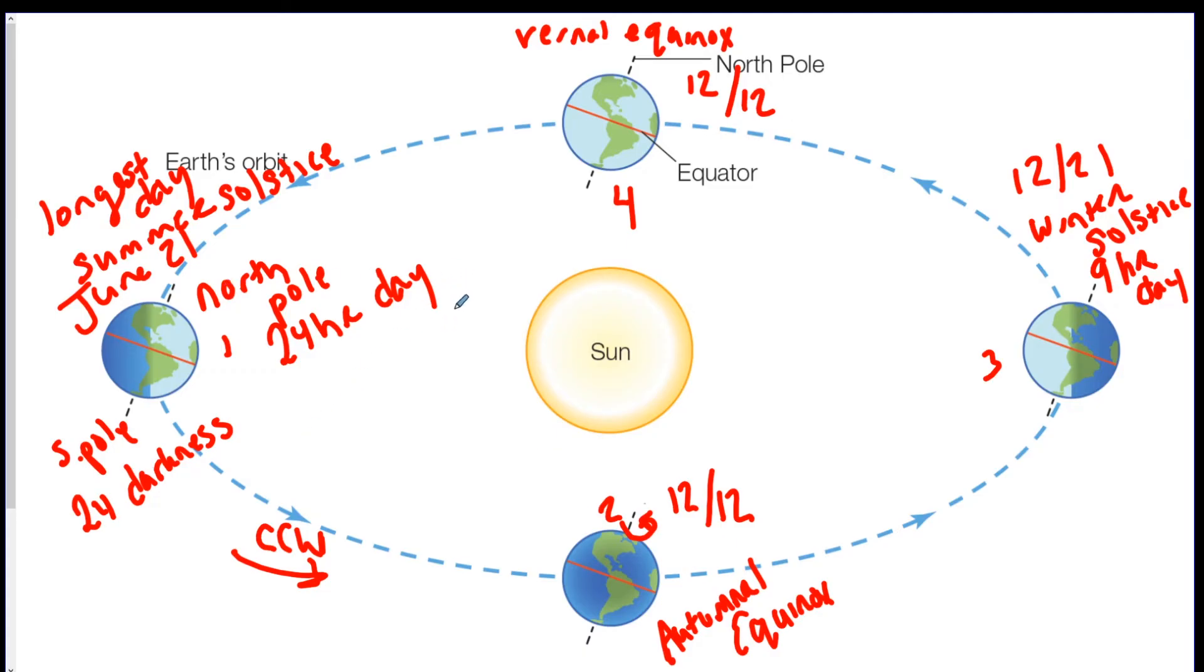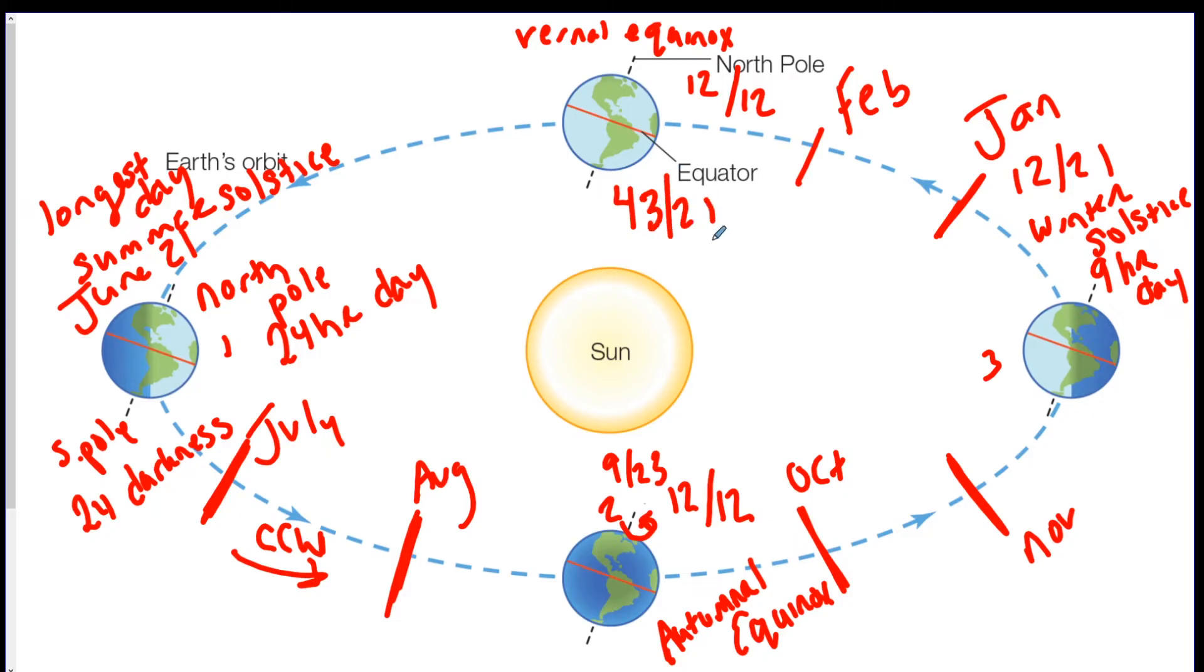The months, if you were to put the months in here, July would be here, August would be here. Then you got September which is 9/23 for autumnal, then October, November, December 21st would be here. Then we got January, February, the vernal equinox is March 21st, and then we got April, May, and then back to June. This is generally how this chart works. The big thing to just note is the tilts. You want to be able to identify which one is tilted towards and which one is tilted away, and then you'll be able to figure them all out.